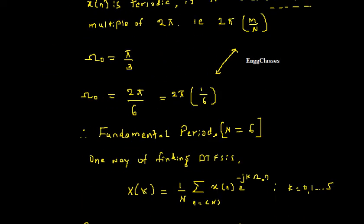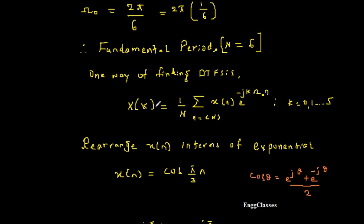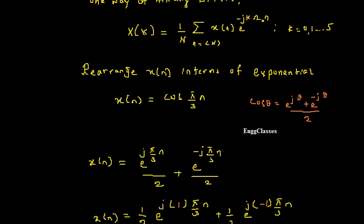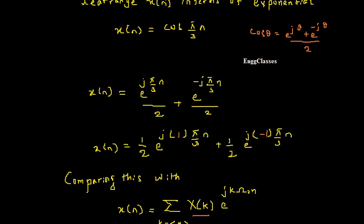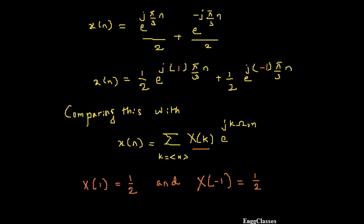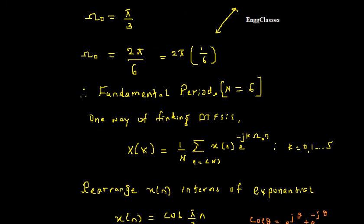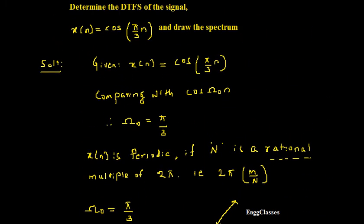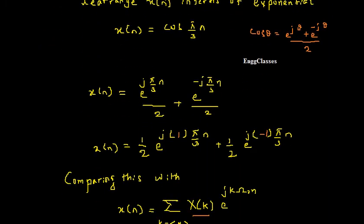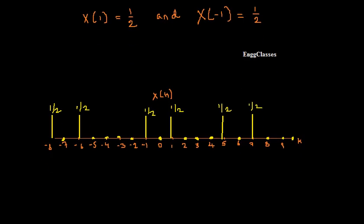This is how we solve a DTFS numerical very easily. Rather than using the definition formula for X(K), I found the DTFS coefficients simply by comparison. This is the easiest and best way to find DTFS coefficients and draw the spectrum. I hope you have understood — if there are any doubts, please let me know in the comment section. Subscribe to ng-classes for more videos in signals and systems. Thank you everyone for watching.